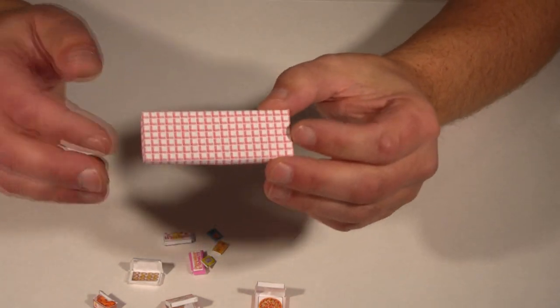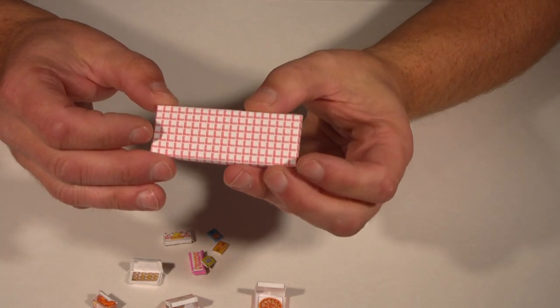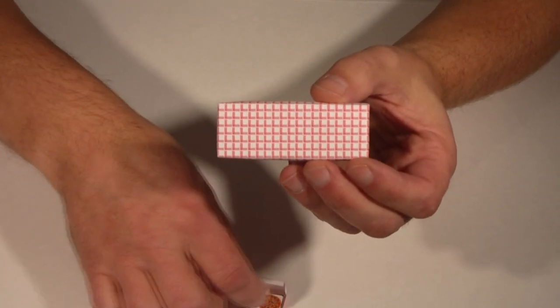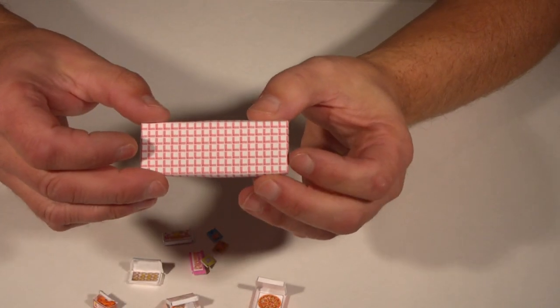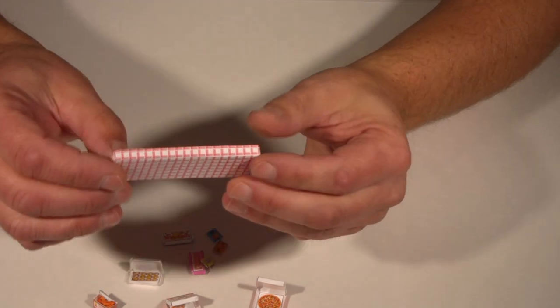And there's two different tablecloths in there. This one's printed on regular paper like a paper cloth would be. You can also print it on photo paper, like I did with the food items, to make it look like a plastic tablecloth. So it's up to you what you want to do.